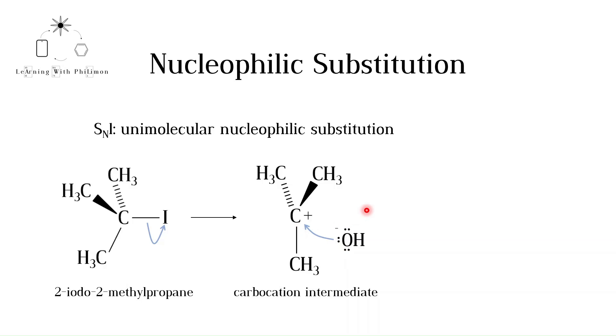In the IB course you are only required to draw SN2 and SN1 mechanisms with a hydroxide ion as the nucleophile. Check the link in the description to see the added step required if water is the nucleophile. Note that yet again a halogen is replaced by a hydroxyl group, hence the term substitution. The alcohol formed in this reaction is 2-methyl-propan-2-ol.